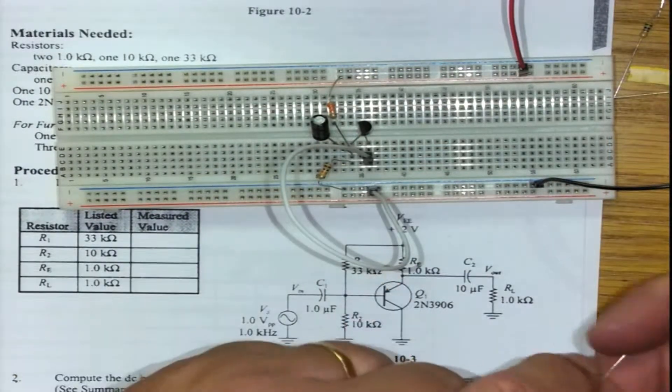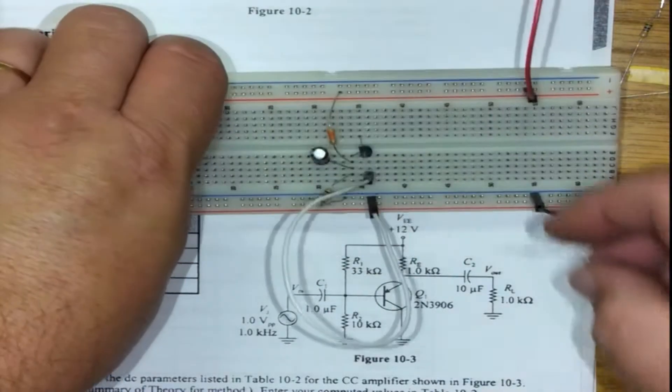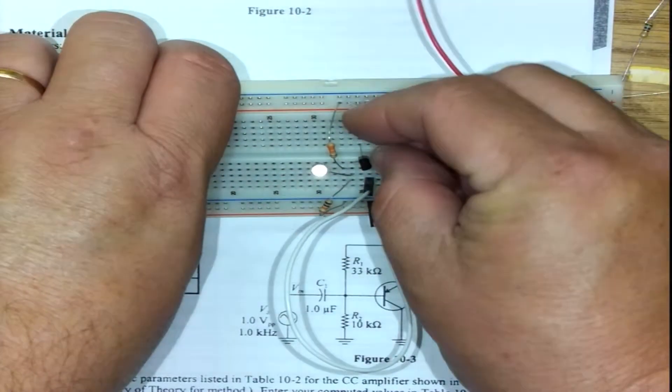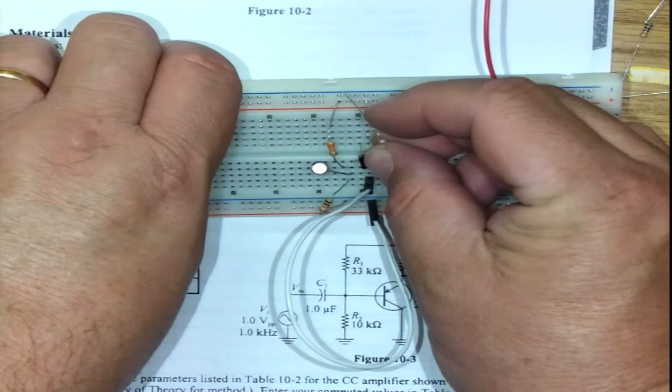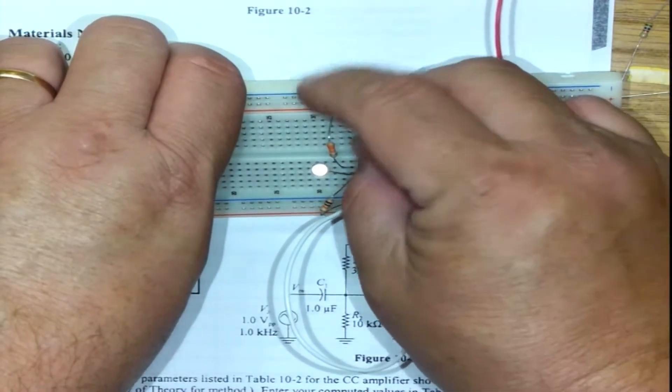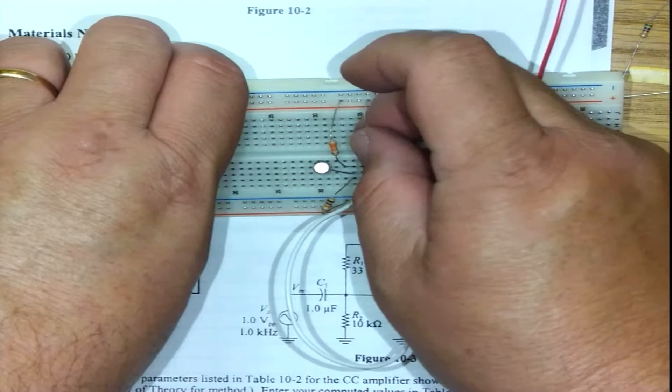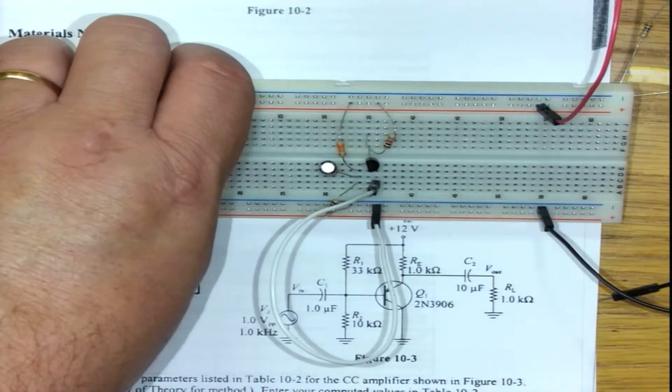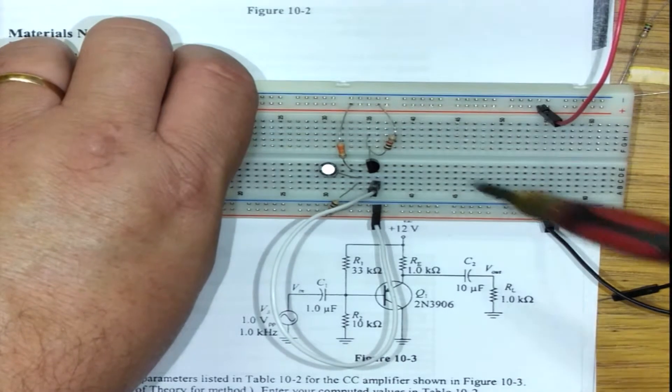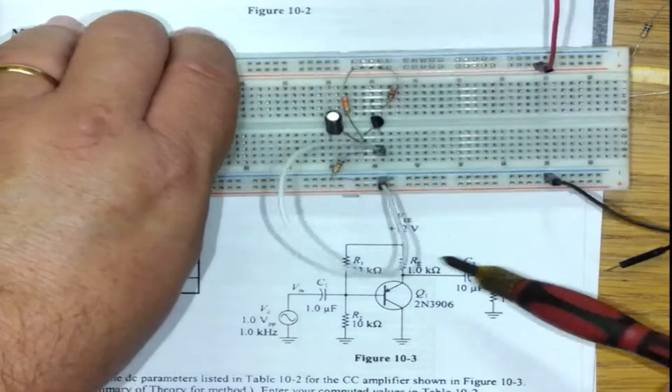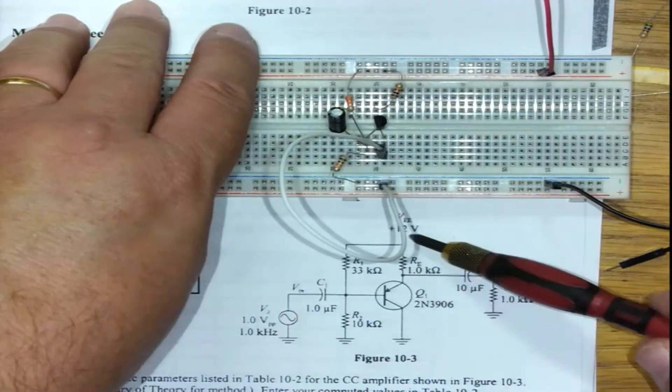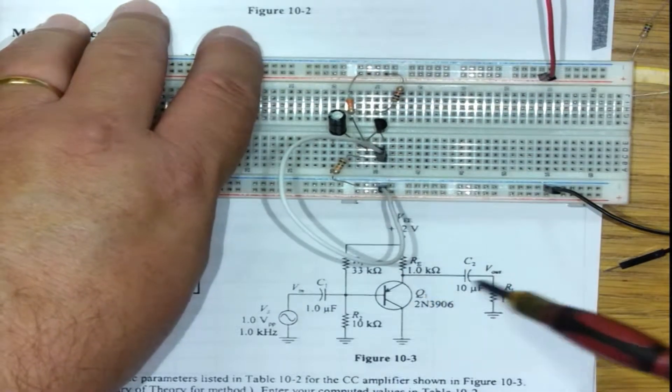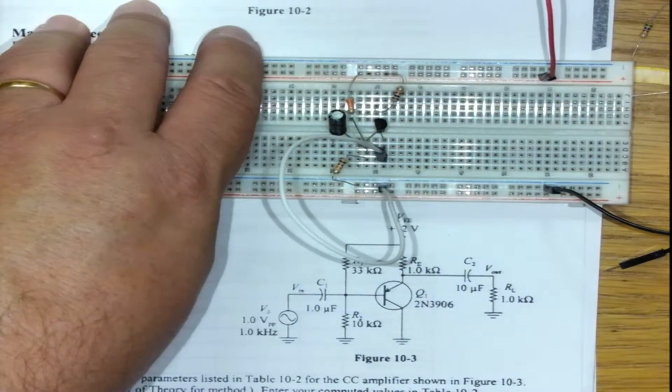I have a one kilohm resistor that must come from the emitter—easy to get confused when you're used to the common emitter circuit. The one kilohm resistor plugs in like that, connecting the emitter to plus 12 volts.